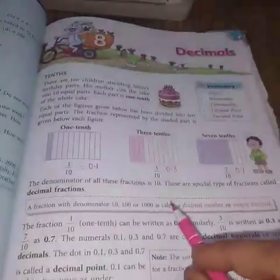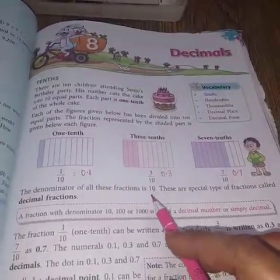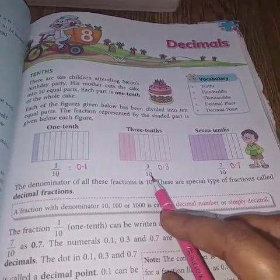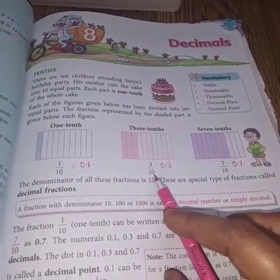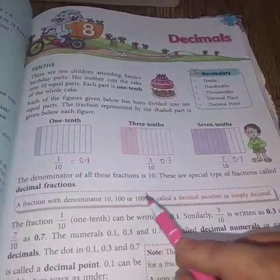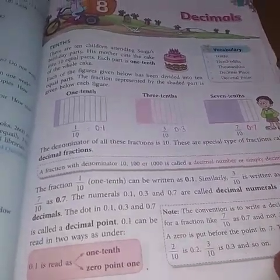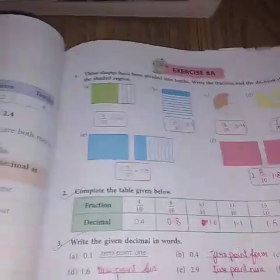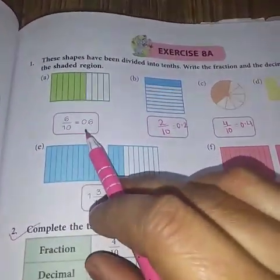So when we have 10, 100, 1000 as denominator, then these type of fractions are called decimal fractions. Now we will learn how to write down a fraction in decimal.